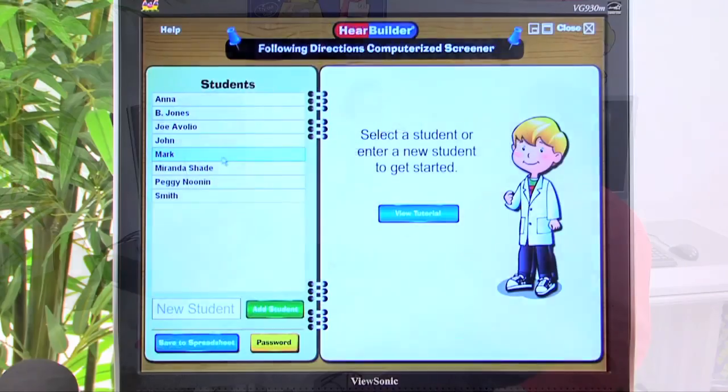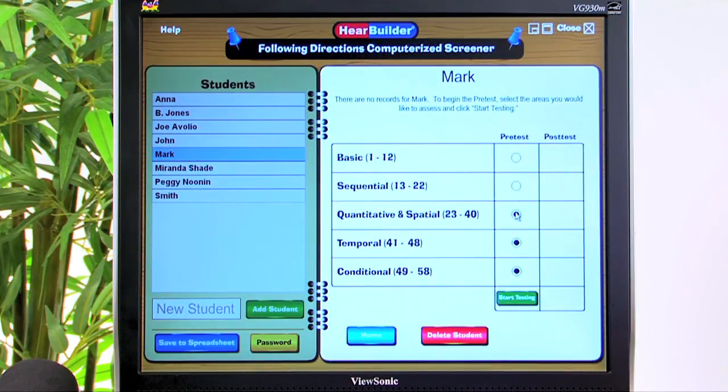We can go back to the home screen, and now let's take a look at a few examples from the Conditional Directions subtest.